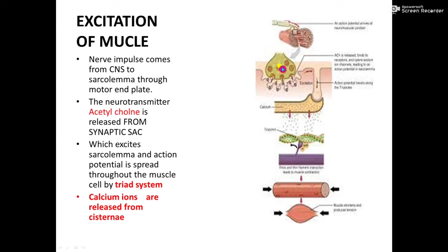The synaptic cleft is the gap present between the neuron and the muscle fiber. Acetylcholine is the neurotransmitter which is liberated into the synaptic cleft. Acetylcholine attaches to receptors present on the post-synaptic membrane, that is the sarcolemma, and the sarcolemma is excited. Action potential is transmitted to the sarcolemma, and from the sarcolemma, action potential leads to the T-tubule.